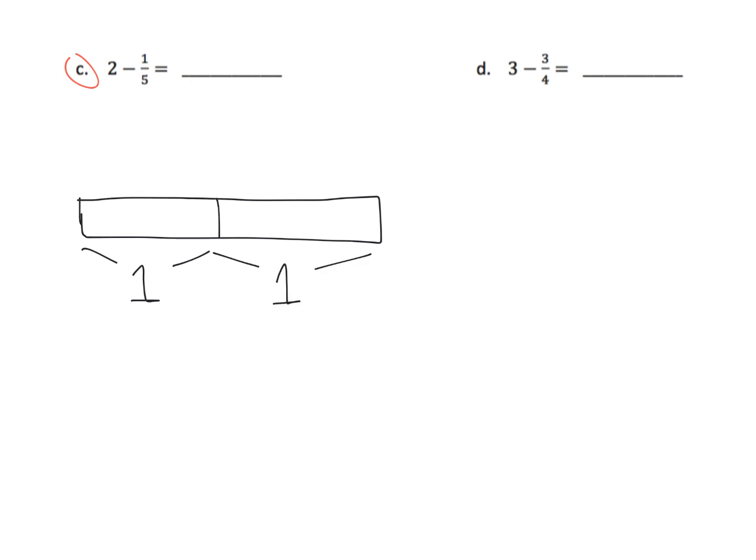Now if we wanted to cut off or subtract off a fifth, what we would need to do is take one or both of these, it doesn't really matter, and cut it into five equal sized pieces the best you can. And that subtract a fifth means just kind of what it says is take off one of those fifths.